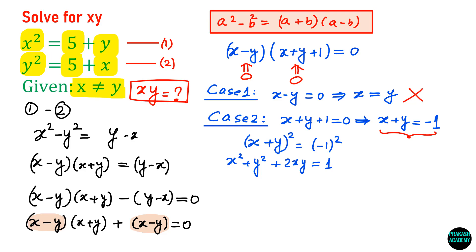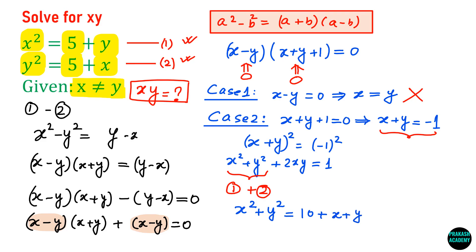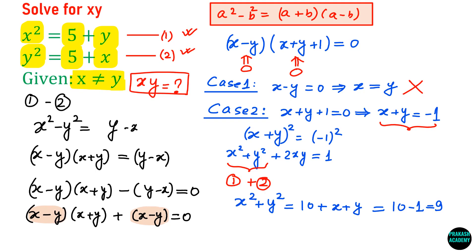But now the question is, we do not know the value of x squared plus y squared. This can be obtained by adding equation 1 and equation 2. Adding them gives x squared plus y squared equals 10 plus x plus y. Since x plus y equals minus 1, we get x squared plus y squared equals 10 plus negative 1, which equals 9.